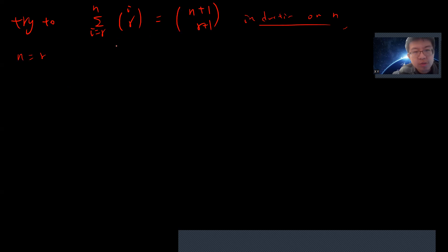If n equals r, that is true, because (r choose r) is basically (r+1 choose r+1), which is 1. So I suppose that n=k is correct, meaning the sum from i=r to k of (i choose r) equals (k+1 choose r+1). Our goal is to show n=k+1.